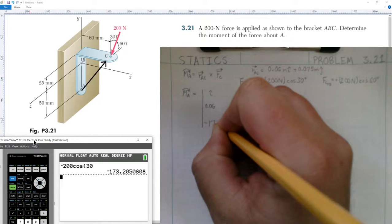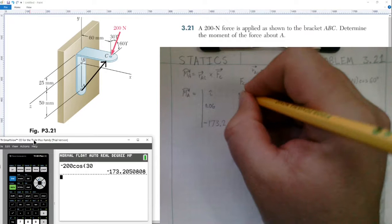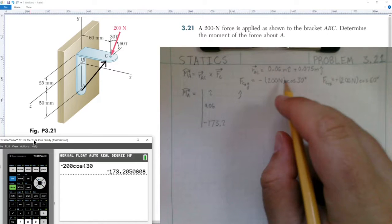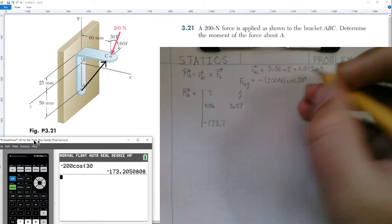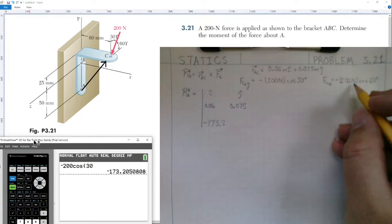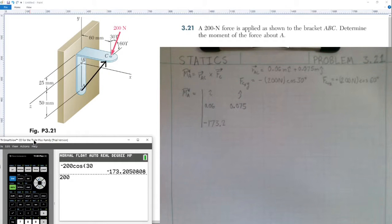We have our j-hat value. The position vector is 0.075 and our force is 200 cosine of 60. Cosine of 60 is one half, but we'll multiply it out. 200 times cosine of 60 would be simply half of that, 100.